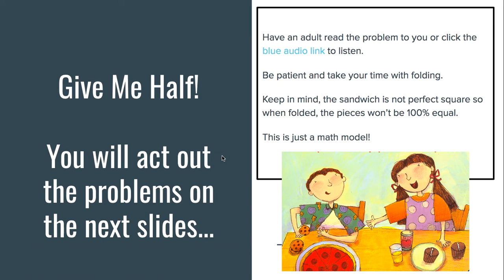You are going to act out the problems on the next slide. If you are able, have an adult read the problem to you, or you can click the blue audio link to listen to another adult reading the problem. Be patient and take your time. Keep in mind, the sandwich is not a perfect square, so when it's folded the pieces won't be 100% equal — this is just a math model, so try your best.